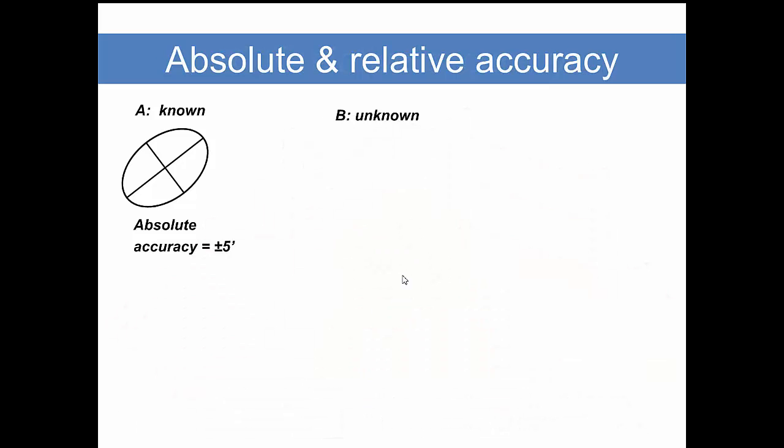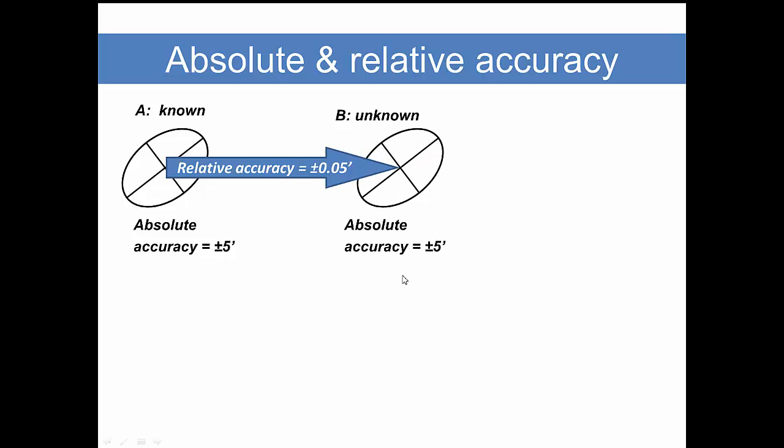Let's say this another way. Absolute accuracy would be the accuracy with which we know a position relative to the earth. Maybe we're expressing this in some datum or map projection with some coordinate system. We could have a point whose absolute accuracy is known to plus or minus five feet. With RTK methods, we can measure with a good relative accuracy, but the relative accuracy doesn't make the absolute accuracy of our derived points any better than what we started from. We could say that this would be poor absolute accuracy but good relative accuracy.